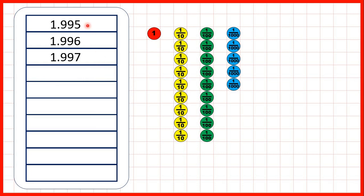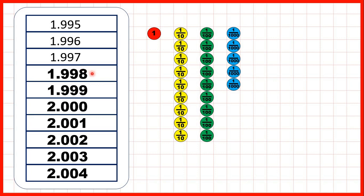Finally, we have 1.995, so one whole, nine tenths, nine hundredths, and five thousandths. If we complete the sequence, you can see that we get 2.000, but if you have a decimal point and then zeros on the end of a number, you have a whole number.